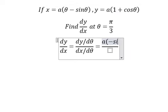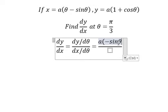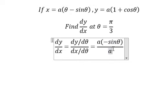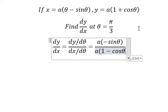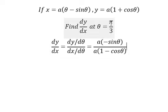Next we have negative sine θ. For the denominator, we have 1 minus cosine θ. Now we can substitute θ = π/3 in here and here.